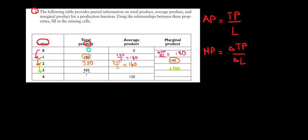And the average product is going to be the average of this 420 spread over three employees. So 420 divided by three, that's going to give us 140, 140 average product.